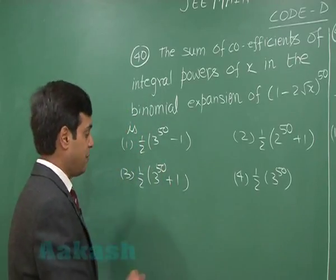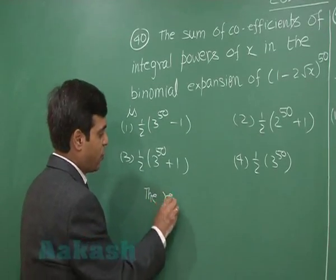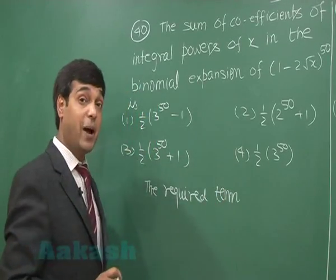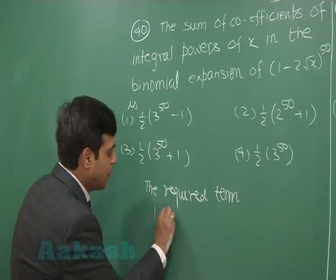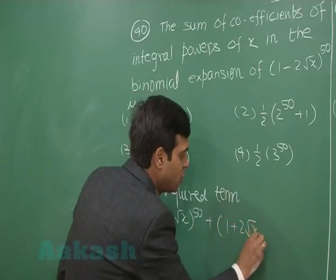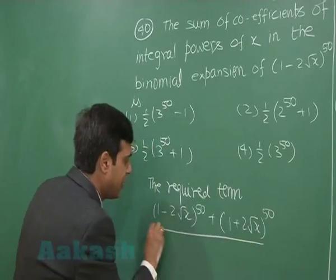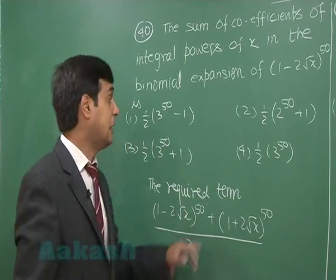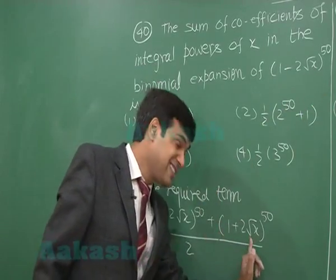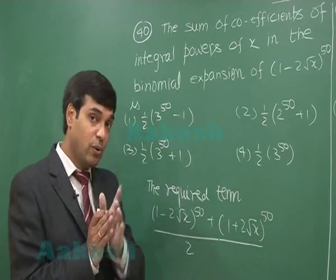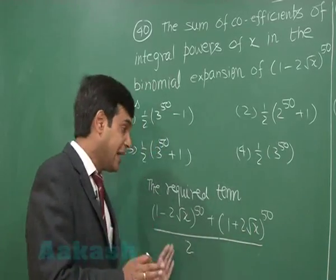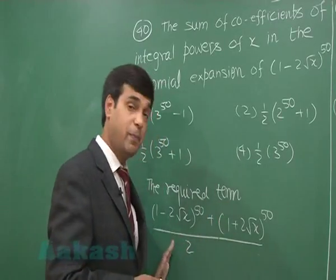What we can do to solve this one: the required term can be obtained by considering the expression [(1 - 2√x)^50 + (1 + 2√x)^50] / 2. What we did, when we expand it we will be getting alternative plus minus. When we expand this term we will be getting all positive. On adding the two, we observe that odd powers of √x would be cancelled out. We get double of the even terms, so simply divide by 2 to get the answer.